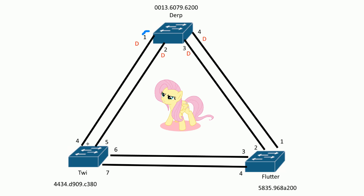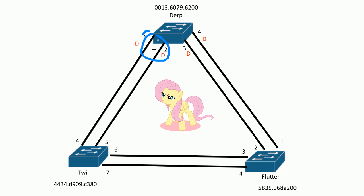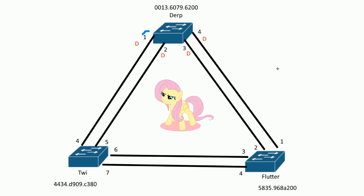That's a little disappointing. The next step for tie breakers is the neighbor bridge ID. That's going to be a problem too, because both of these ports connect to the same bridge — the same switch. It's not like one port goes to one switch and another port goes to a different switch. Both tie on the neighbor bridge ID, so the next would be the port priorities.